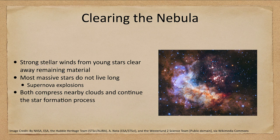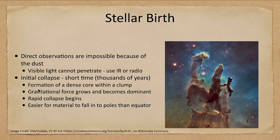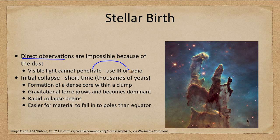When we look at stellar birth we cannot see it directly in visible light, because visible light does not penetrate the dust. So we use infrared or radio waves — infrared for the later stages and radio for the very earliest stages — as these wavelengths penetrate the dust.